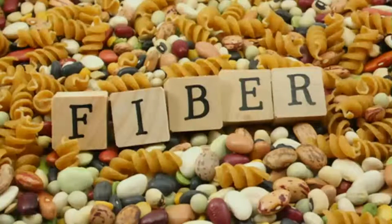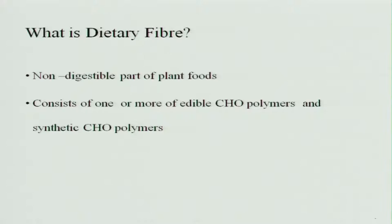Hello everybody. In the last few classes we have spoken about carbohydrates, and I was telling you about the available and unavailable carbohydrates. The unavailable carbohydrates is mostly the food that is not digested in the gastrointestinal tract, which is called fiber. Let us see what fiber is and what are the significant characteristics of fiber in our food.